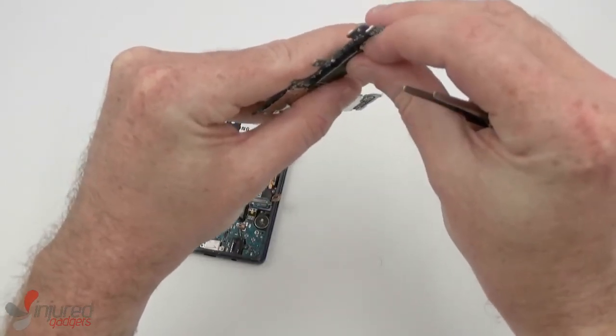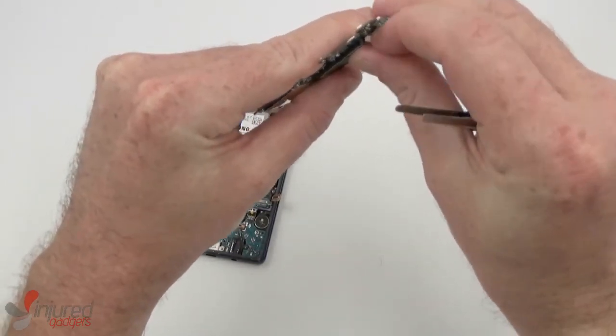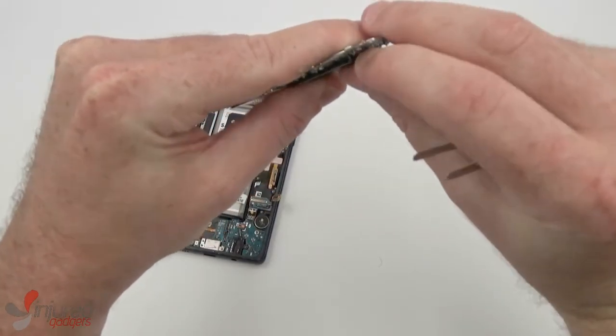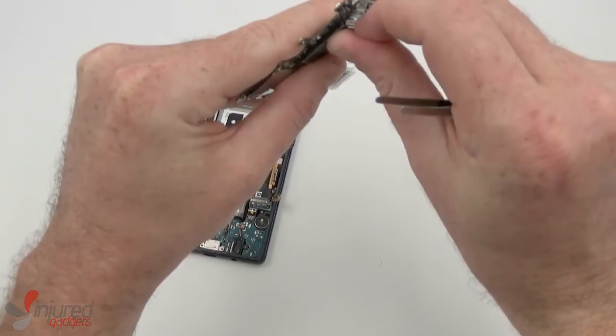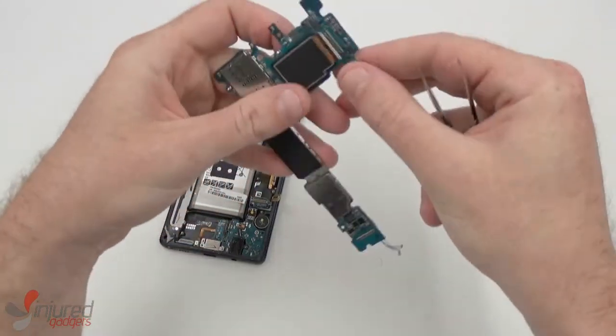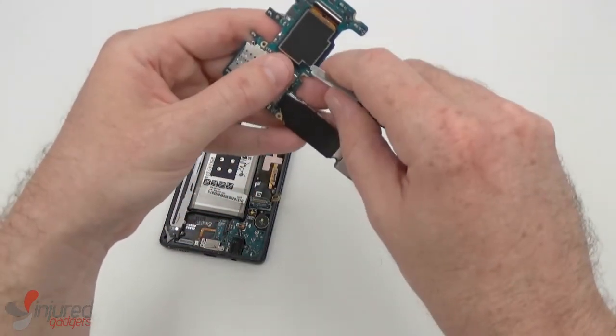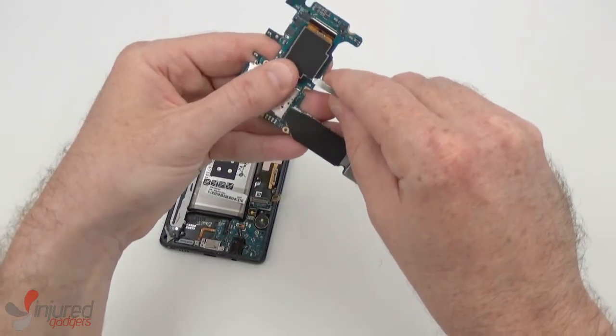Now to remove the rear cameras, simply unplug the flex. And once that's done, you can use blunt nose tweezers or a nylon spudger to kind of wiggle and pry it loose from the main board.